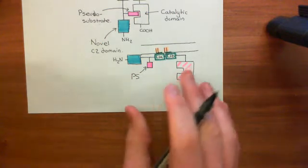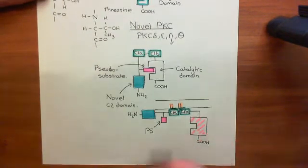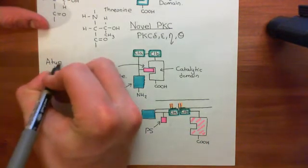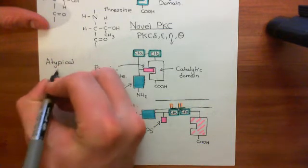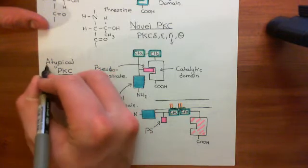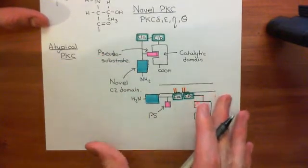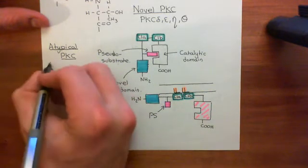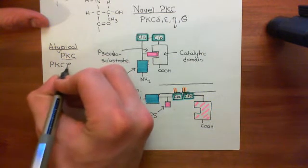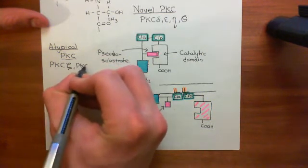Finally, let's turn our attention to the atypical protein kinase Cs. The atypical protein kinase Cs are not going to be activated by the pathway we've spent so long discussing — they have their own weird and wonderful pathways. Just for a complete discussion of the protein kinase Cs, let's mention them. We have protein kinase C zeta and protein kinase C iota.